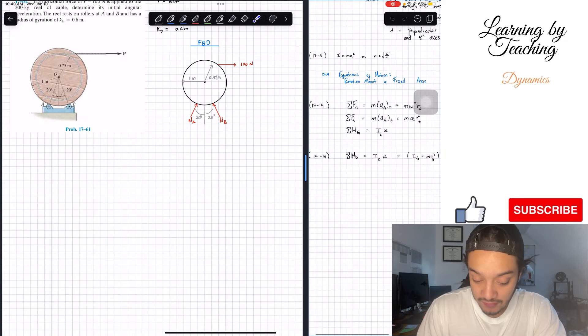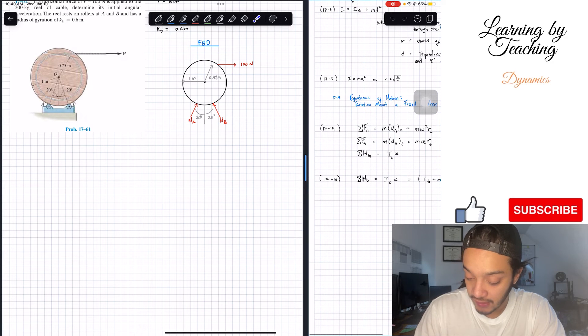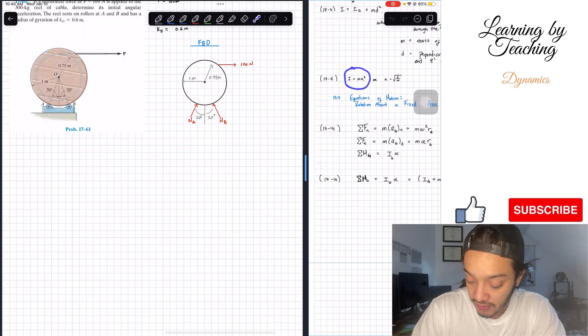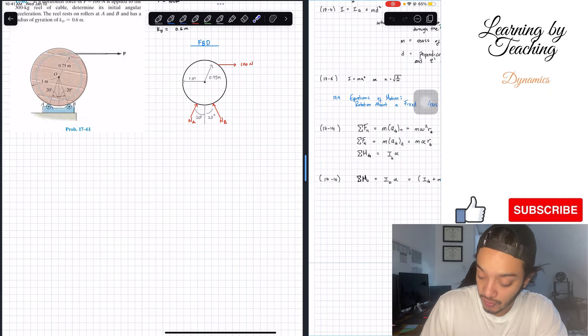Knowing that we're given the radius of gyration and how that's important, we can find our moment of inertia with our radius of gyration using this formula. We're going to utilize these two formulas to find our problem.